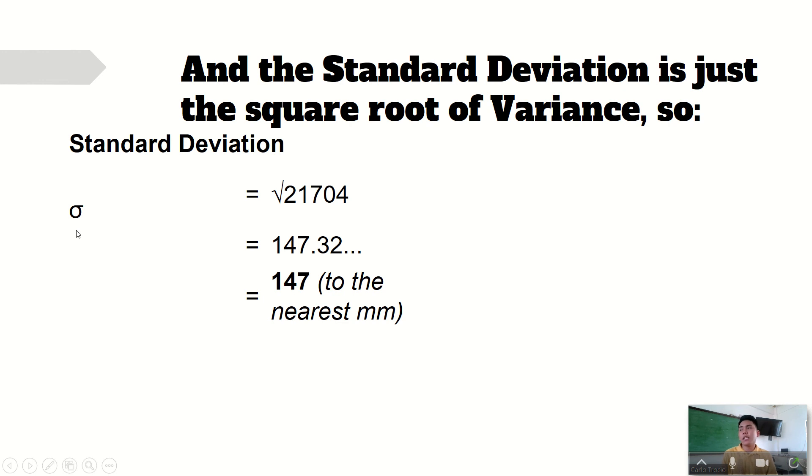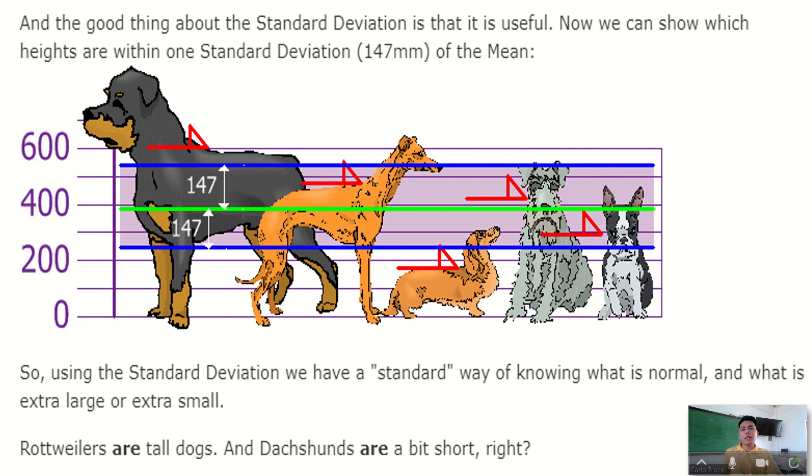Standard deviation is theta. So just use a calculator, square root of the variance, which is 21,704, and that will be equal to 147.32 or 147 millimeters. That is very simple, our standard deviation.